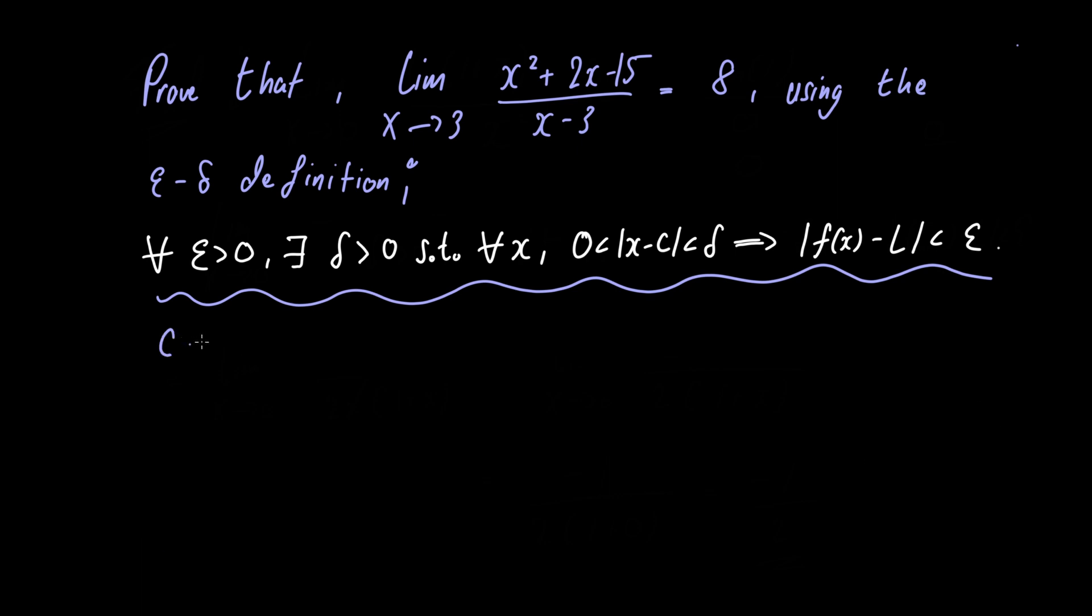Okay, so in this problem c is equal to 3, f of x is equal to x squared plus 2x minus 15 divided by x minus 3, and l is equal to 8.